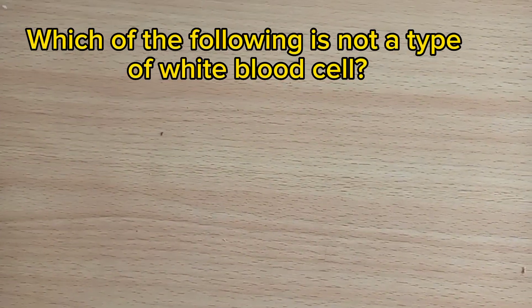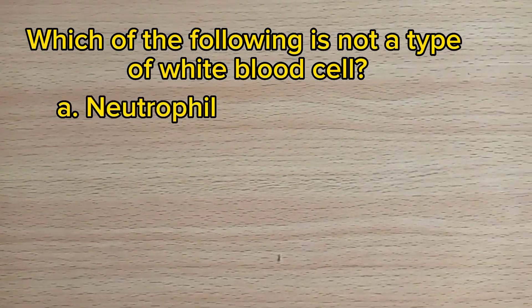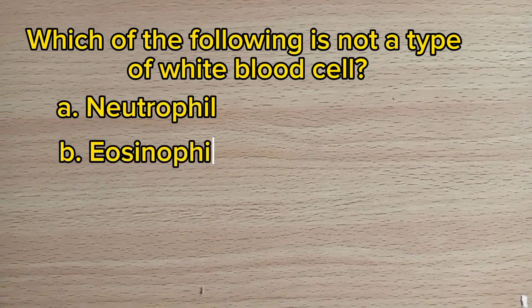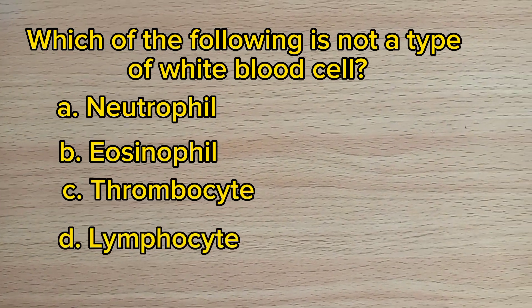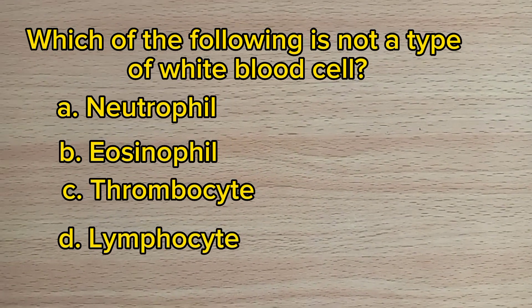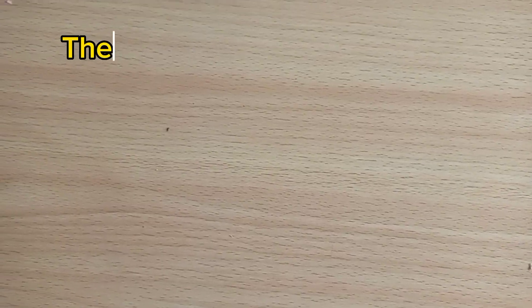Number nineteen: Which of the following is not a type of white blood cell? A. Neutrophil, B. Eosinophil, C. Thrombocytes, D. Lymphocytes. The answer is C, thrombocytes.